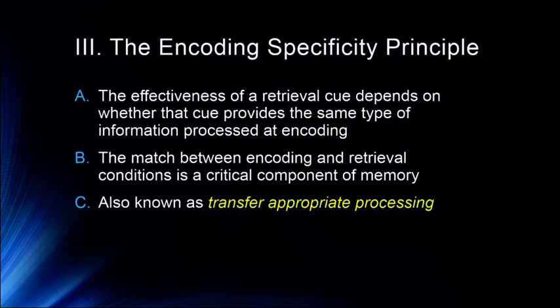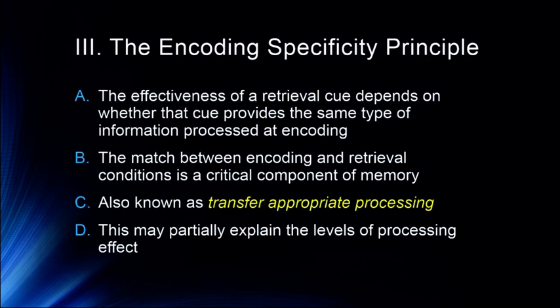The simplest way to put it is that the match between encoding and retrieval conditions is a critical component of memory. This is also known as transfer-appropriate processing — we like to name things twice in cognitive psychology. This is a well-known phenomenon found in study after study. We think it may partially explain the levels of processing effect, because retrieval in episodic memory is meaning-based rather than perceptually-based, so levels of processing occurs because it matches retrieval with type of encoding.